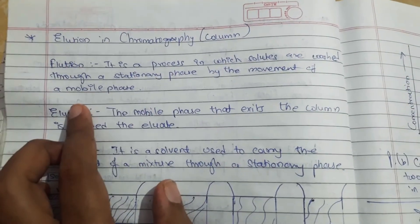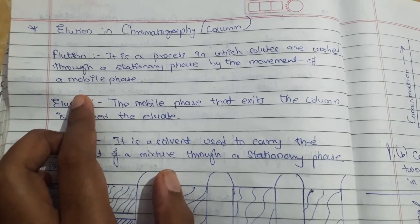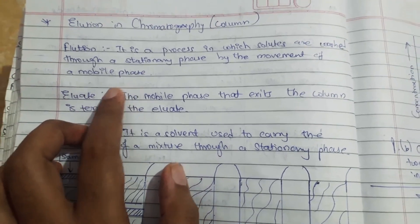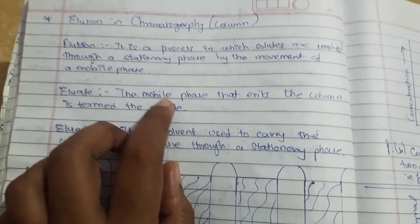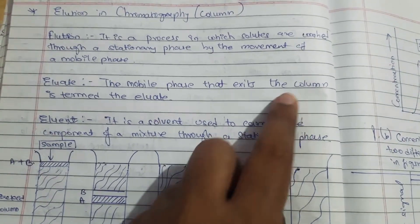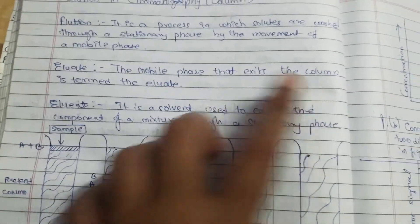Elution is a process where the solution is washed. The stationary phase is washed by the mobile phase that exits the column, which is termed as eluent.